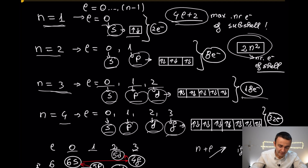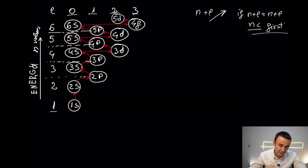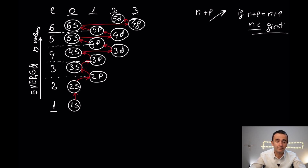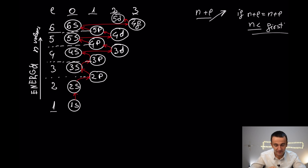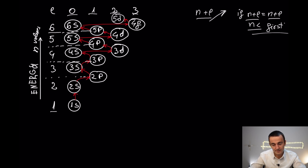In terms of electrons: s contains a maximum of 2 electrons, p 6 electrons, d 10 electrons, and f 14 electrons. We are going to use this scheme to write electronic configurations. This scheme is generated using the Aufbau principle, which assigns electrons by increasing n+l value. If n+l is the same, we fill the shell with the smallest n first.